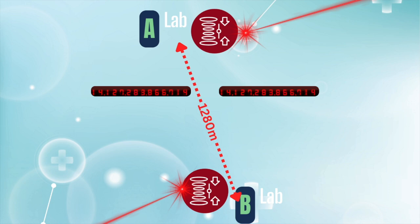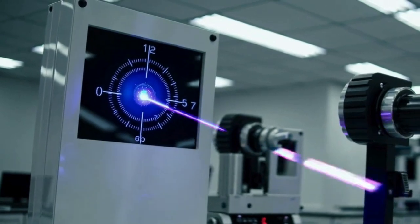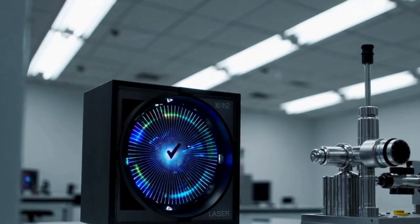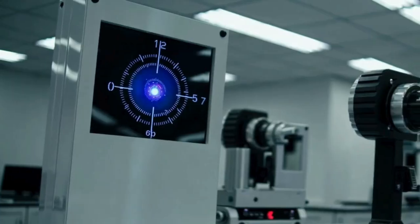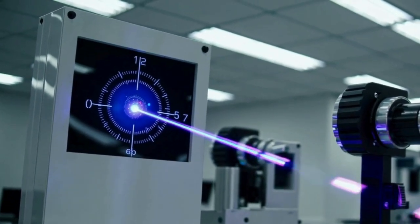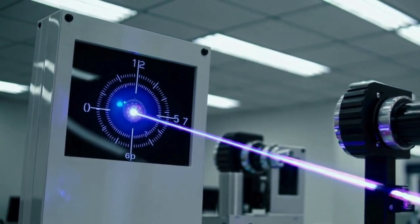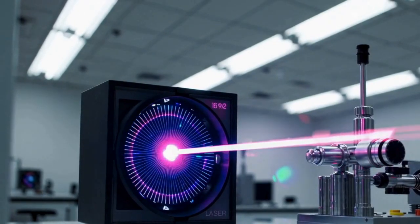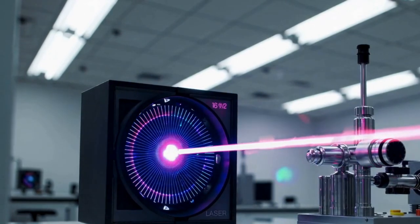But for the experiment to succeed, these electrons, prepared in separate laboratories 1,300 meters apart, had to become entangled. Even though they were physically separated, they had to be quantum mechanically linked. And this is where things get truly fascinating. In both laboratory A and laboratory B, laser pulses were fired at the electrons simultaneously, ensuring that they absorbed the same energy level at the same time. However, this process required incredible synchronization. The timing had to be so precise that the laser pulses in both laboratories had to occur at exactly the same moment. So, how was this achieved?